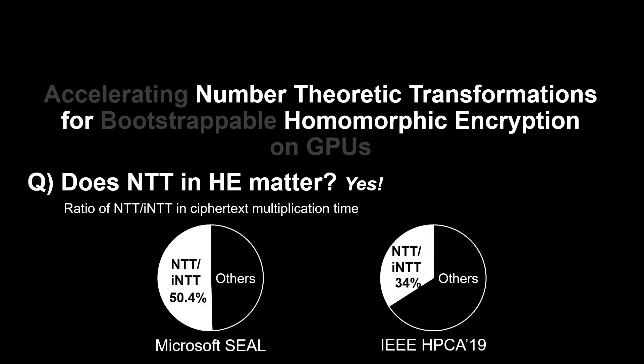Then the following question is: does NTT in HE matter? Yes. Here is a ratio of NTT and its inverse transform INTT in the time of multiplication between ciphertexts of HE. NTT and INTT take 50.4% of the time when running with open-source software, and a reported value in prior work says 34% of the time is used for NTT and INTT.